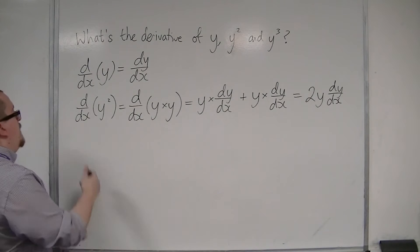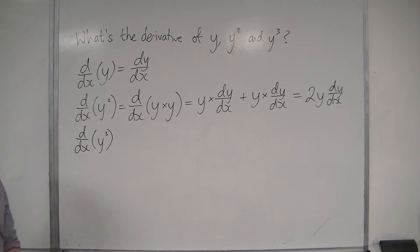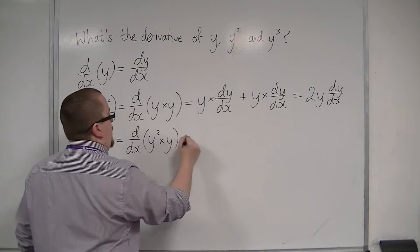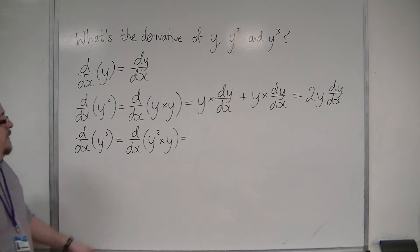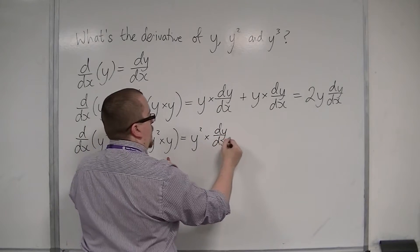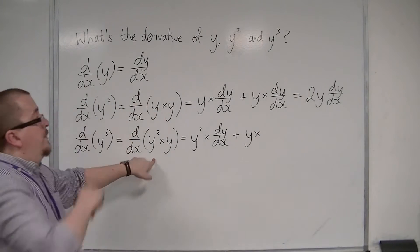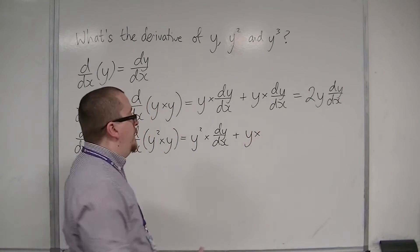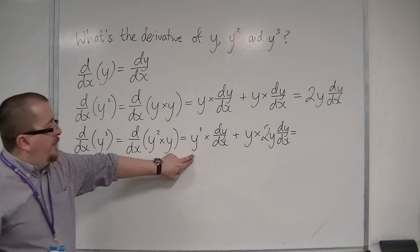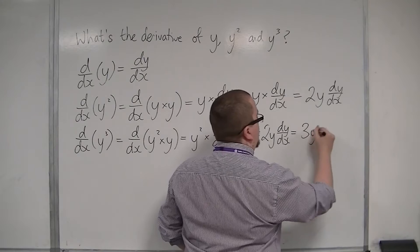How about differentiating y cubed? We could do this in a similar way — write it as the derivative of y squared times y, and use the product rule again. That's the first times by the derivative of the second, plus the second times by the derivative of the first. The derivative of y squared we've already worked out — that's 2y dy/dx. So we get y squared times dy/dx plus 2y squared dy/dx, which means we have 3y squared dy/dx.